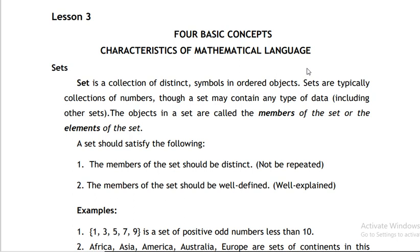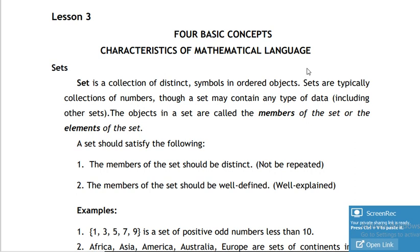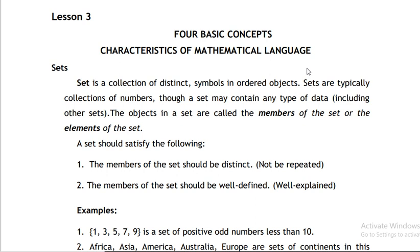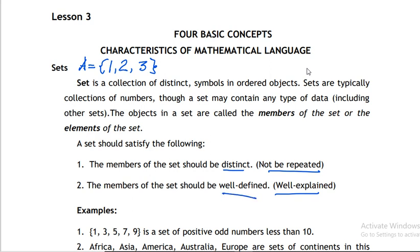First is what we call a set — a collection of distinct, well-defined objects. A set may contain any type of data, basically a collection of anything. Sets are represented by capital letters. The members or elements of a set, for example set A containing one, two, and three, must be distinct — not repeated — and well-defined.